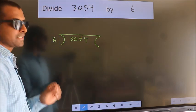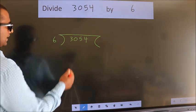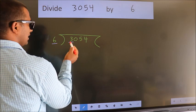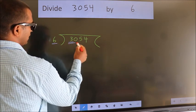This is your step 1. Next, here we have 3, here 6. 3 smaller than 6. So we should take two numbers, 30.